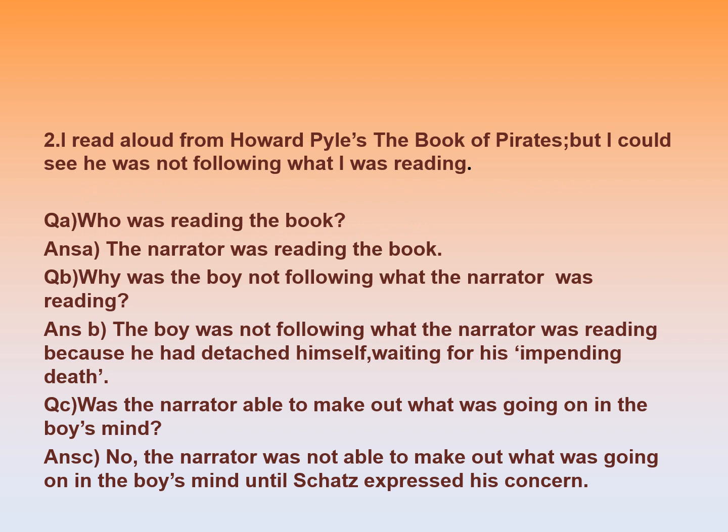The second extract is: 'I read aloud from Howard Pyle's The Book of Pirates, but I could see he was not following what I was reading.' (a) The narrator — Skatz's father — was reading the book. (b) The boy was not following what the narrator was reading because he had detached himself, waiting for his impending death. (c) The narrator was not able to make out what was going on in the boy's mind until Skatz expressed his concern.